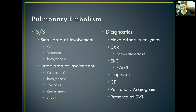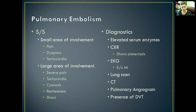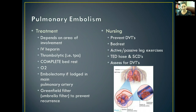Patients will experience restlessness because of decreased oxygenation and probably go into shock as well. Diagnostic tests include looking at elevated serum enzymes, a chest x-ray that will show atelectasis from the obstruction, and an EKG to rule out an MI since it often presents similarly with chest pain and trouble breathing. We can also do a lung scan or CT scan, a pulmonary angiogram to show the blockage, and check for signs of a DVT. Treatment depends on the area of involvement — we give IV heparin to prevent further clotting and TPA, a thrombolytic clot-buster, to dissolve whatever is blocking the pulmonary arteries.